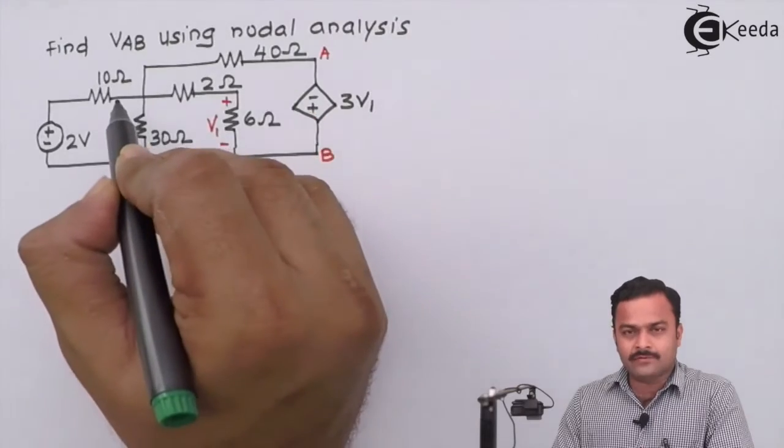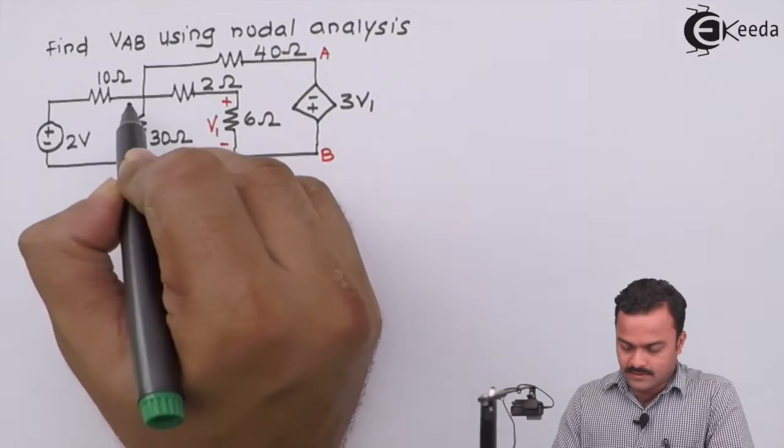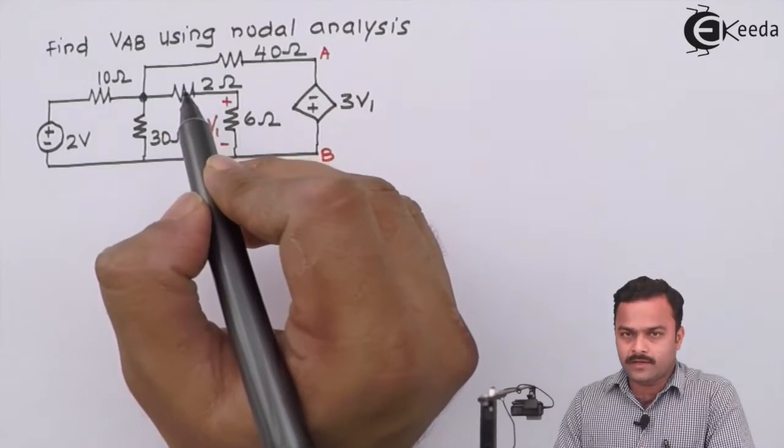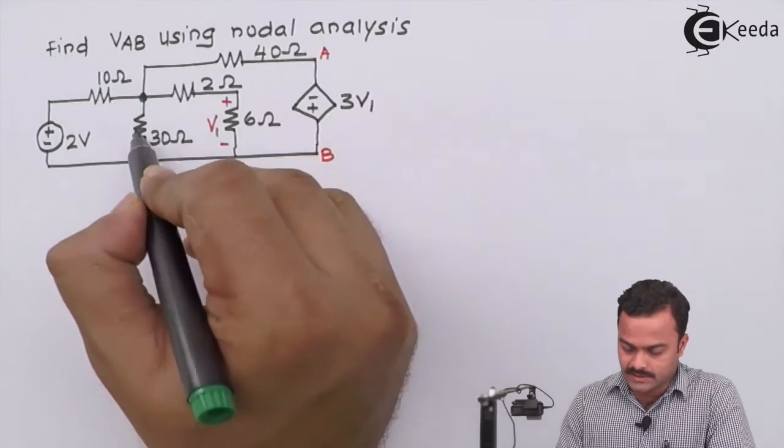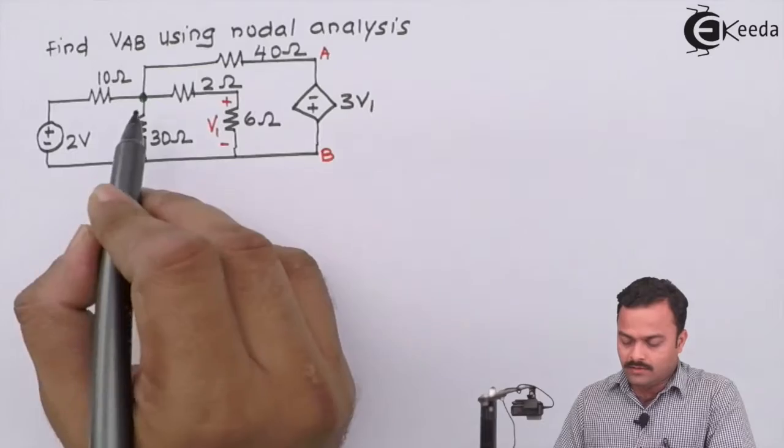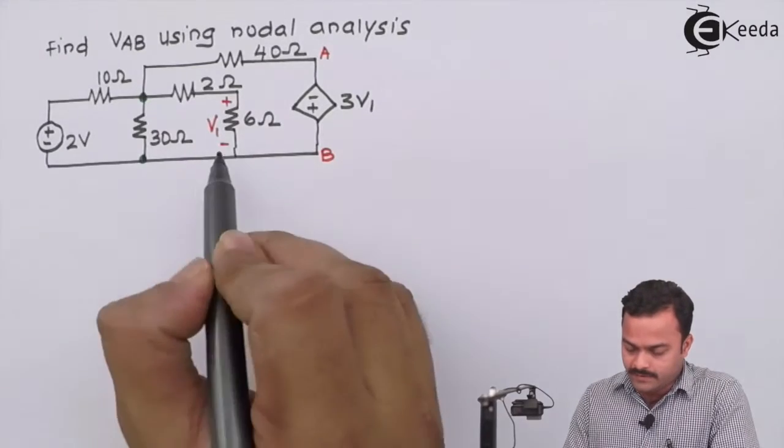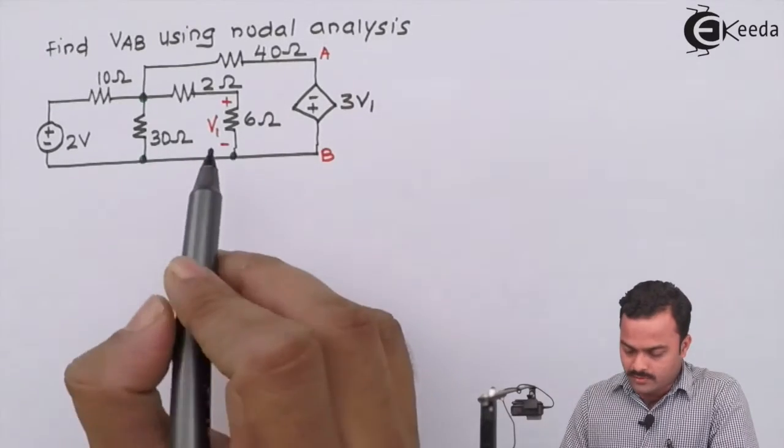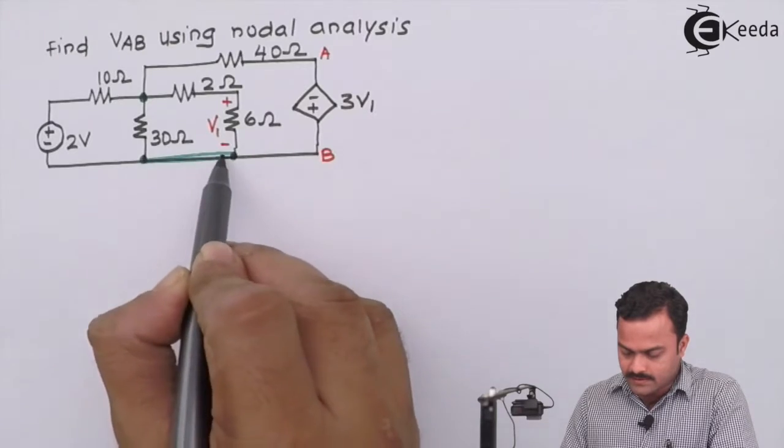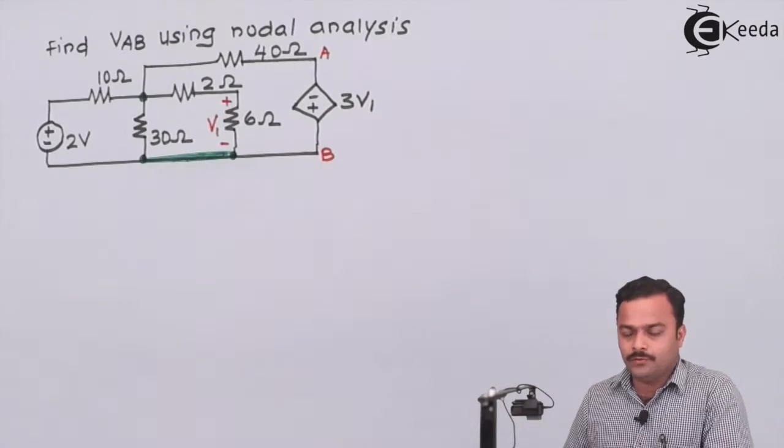So if we see carefully in this problem, this is a node because we have seen a node is a point where three or more branches are connected. So this is another node. So in all, in a circuit, we will be having two nodes because these two points are joined by the same wire.